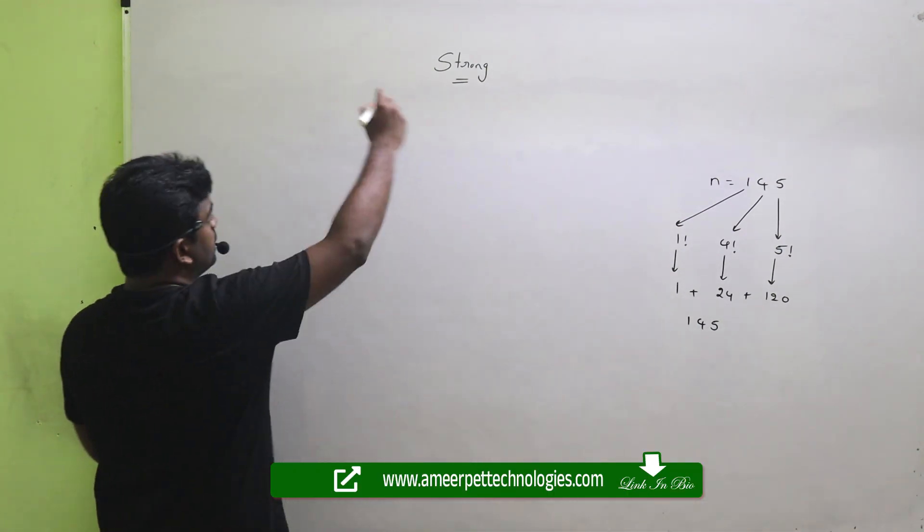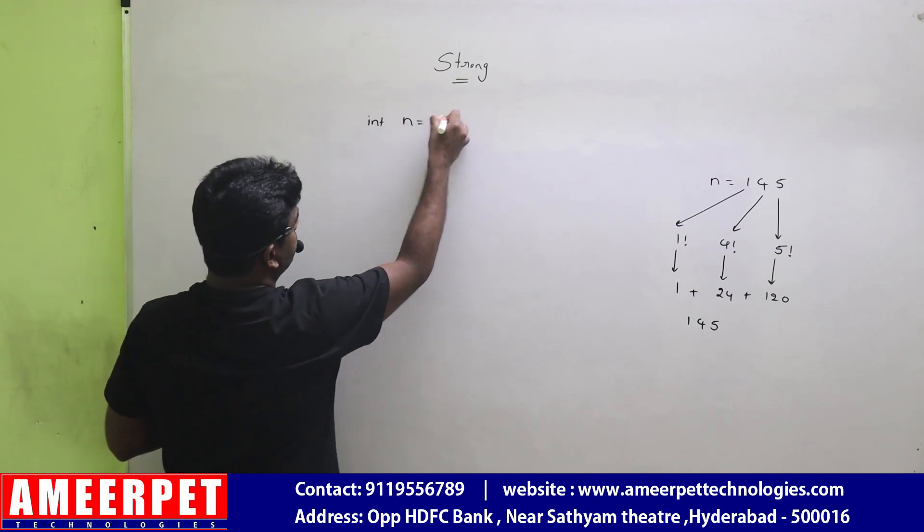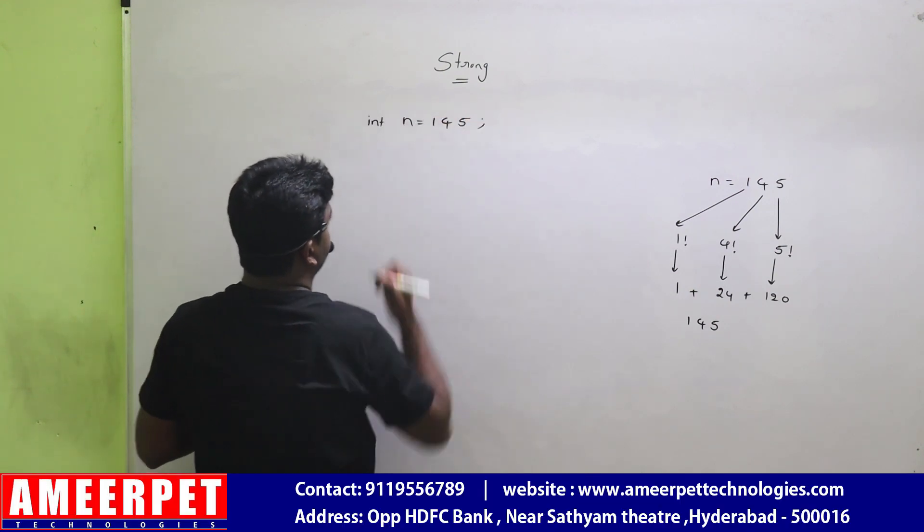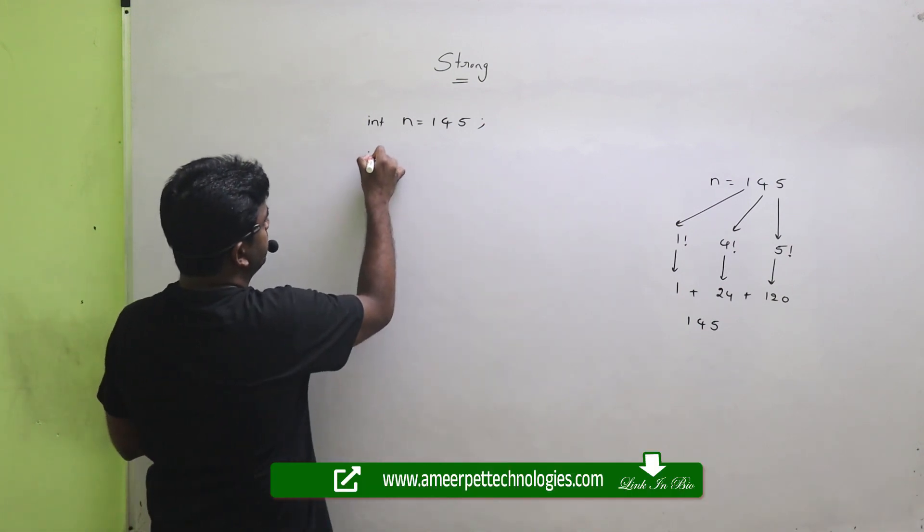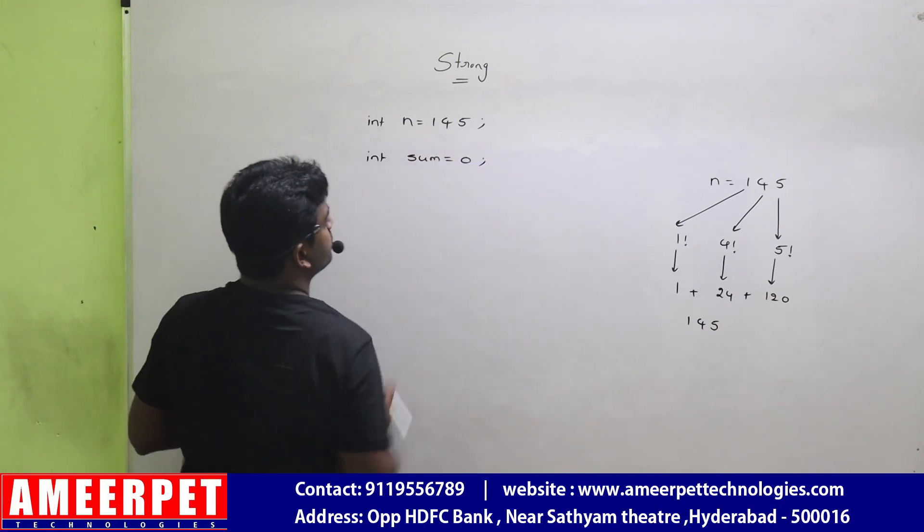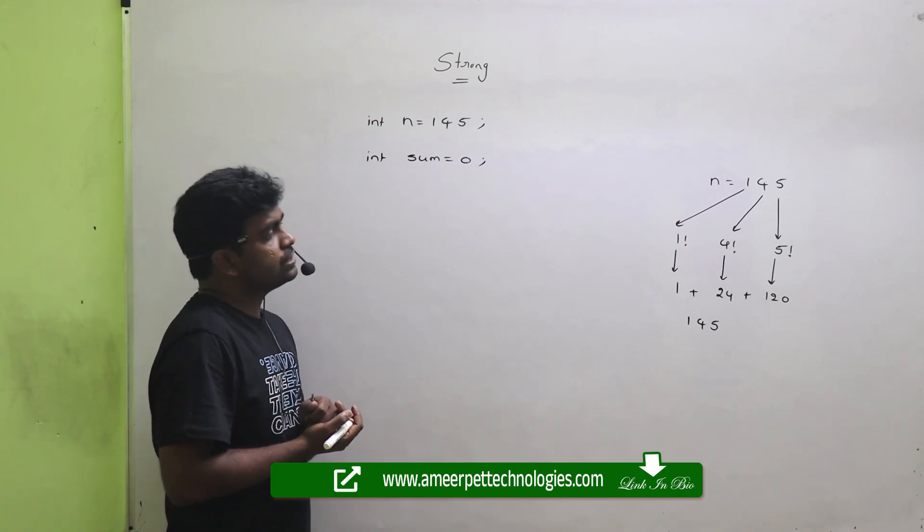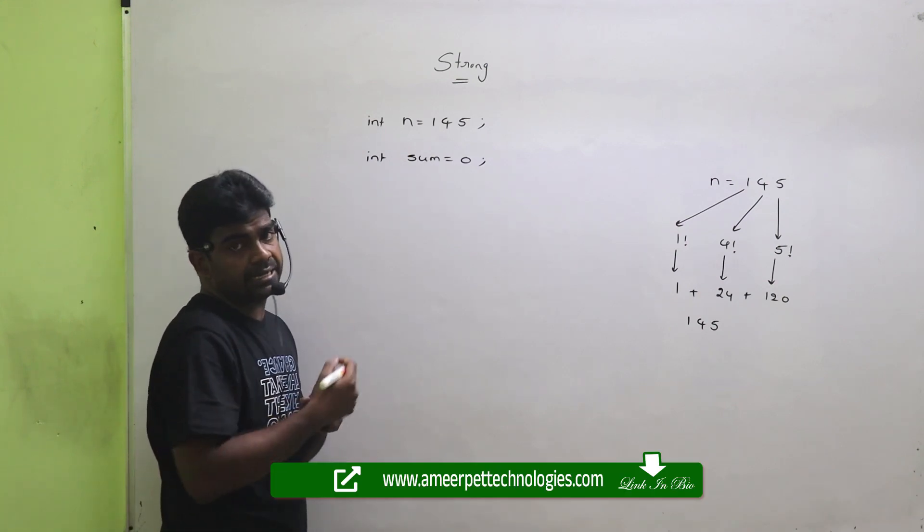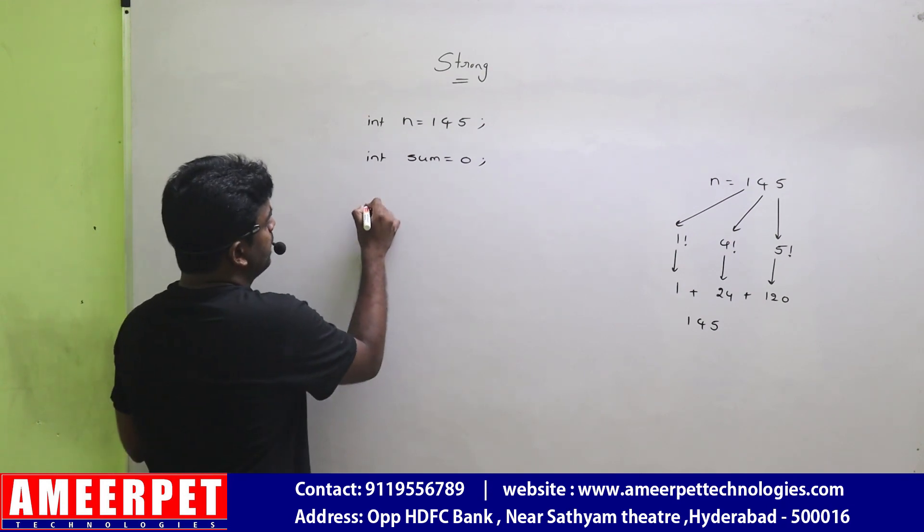See, suppose if I am taking one number: int n equals to some value, I am taking 145. And we need to find the sum value: int sum equals to 0. After declaring the sum equals to 0, now repeating the loop.